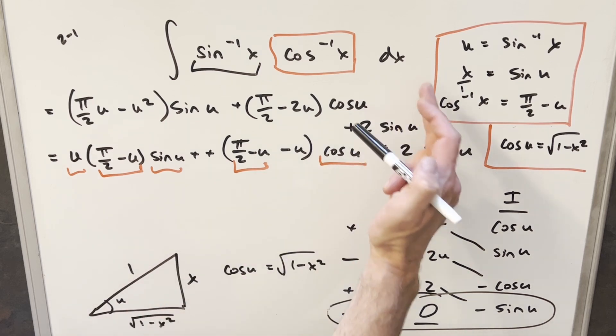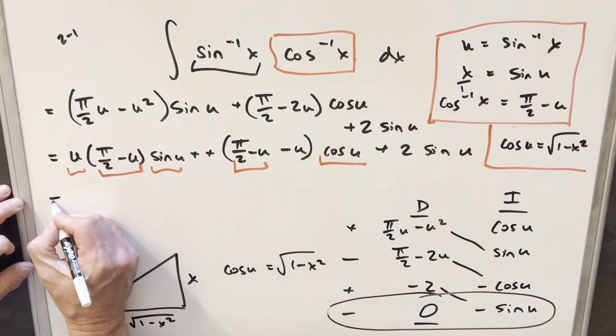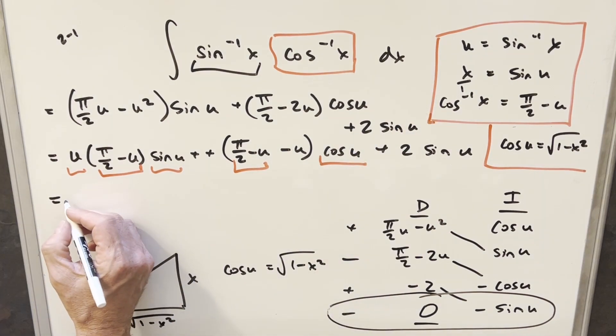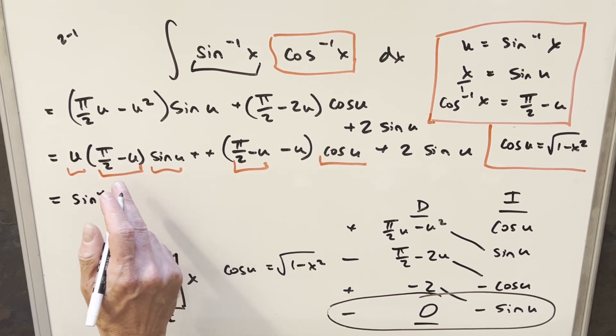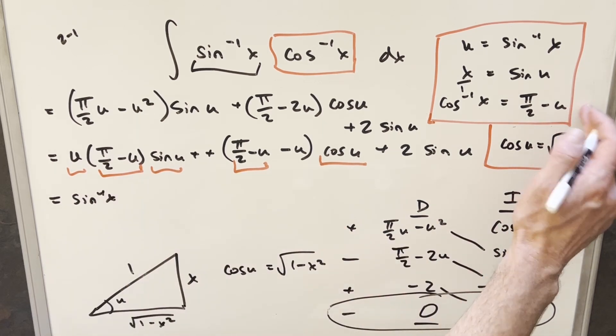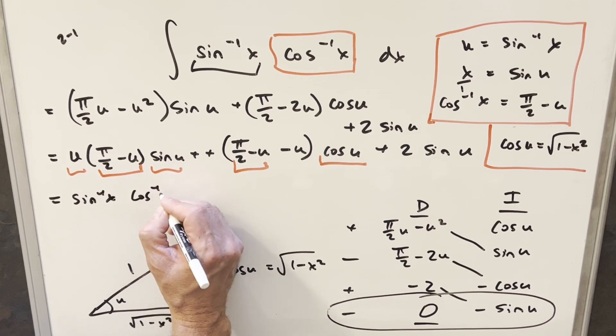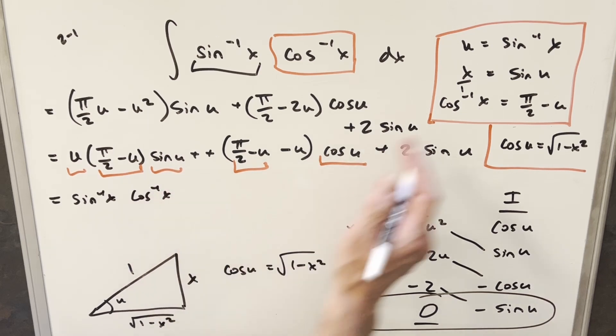So now at this point, I think we have everything we need over here on the right. We should be able to just back substitute. For this u value, I'm just going to have arcsin x. π over 2 minus u is right here. That's going to be arccos x. And sine u is just going to be x.